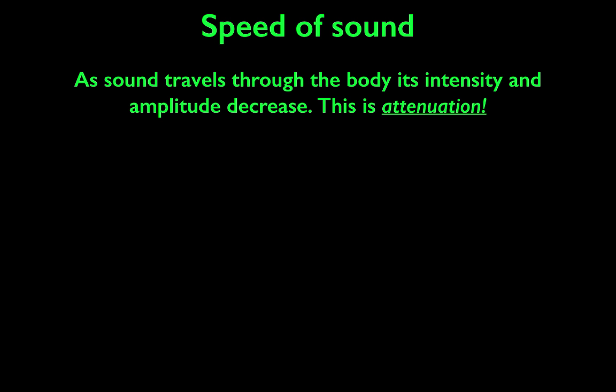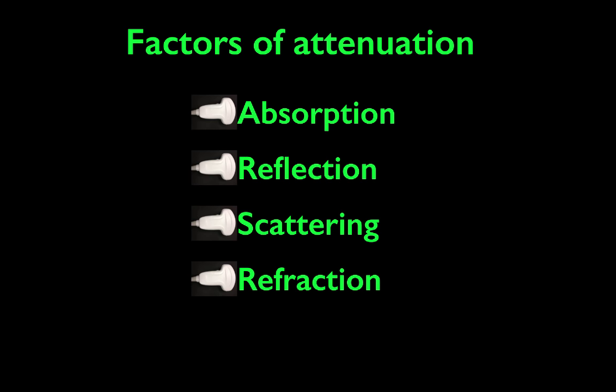What happens with attenuation is that as a sound wave travels through the body, its intensity and amplitude decrease — and that's what we refer to as attenuation. There are several factors that lead to that, and we're going to go over the four factors of attenuation.